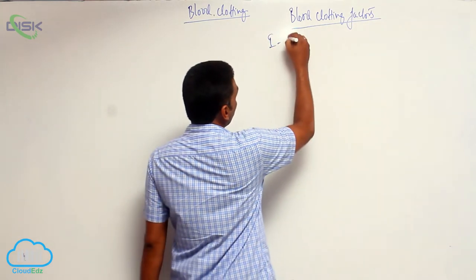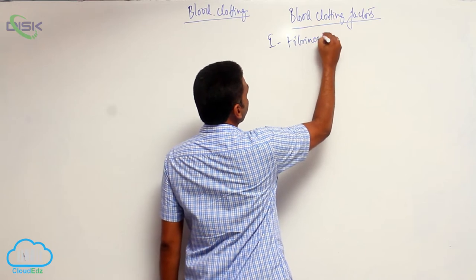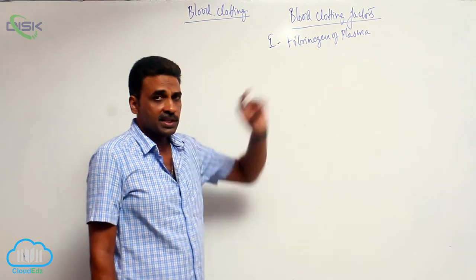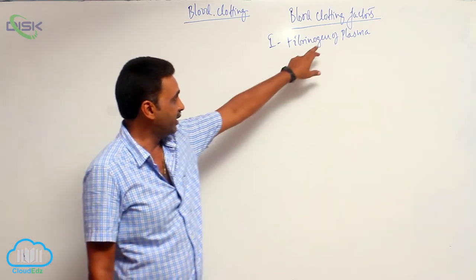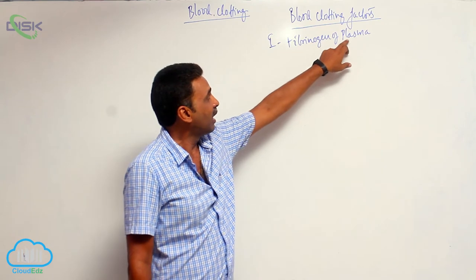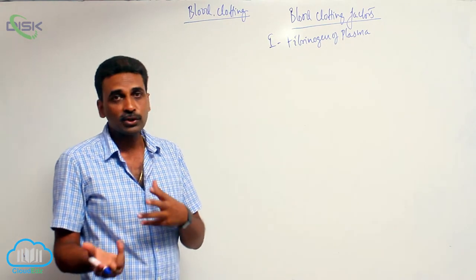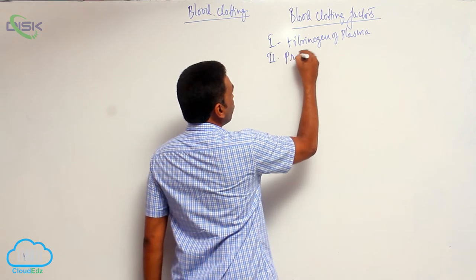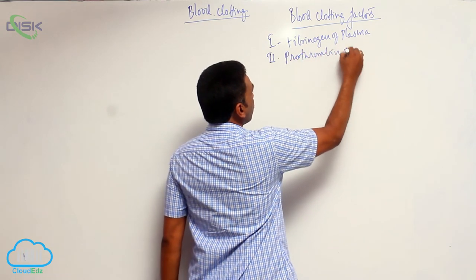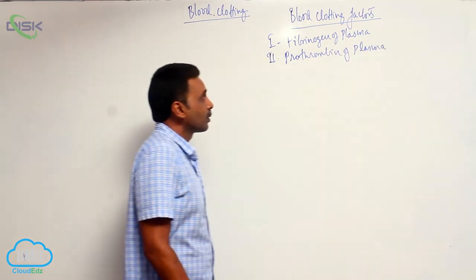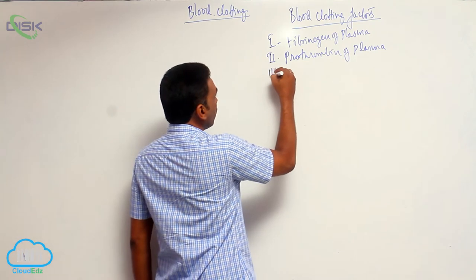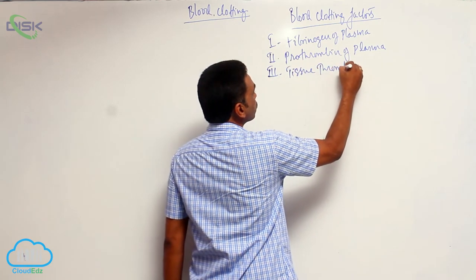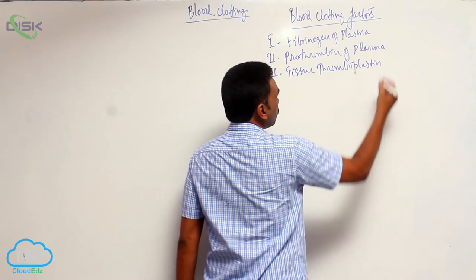Factor number 1 is fibrinogen of plasma. Fibrinogen is a protein produced in the liver and it is inactive when released into the blood — I am referring to the fibrinogen present in plasma. Factor number 2 is prothrombin of plasma. Factor number 3 is tissue thromboplastin, also called tissue factor.